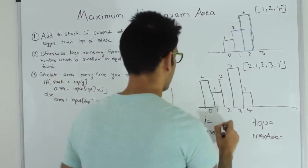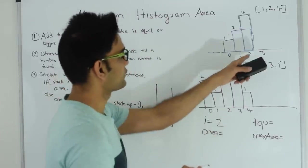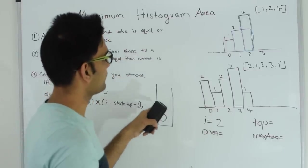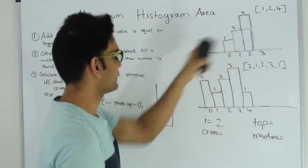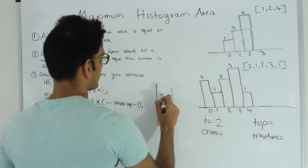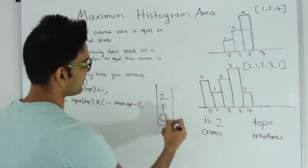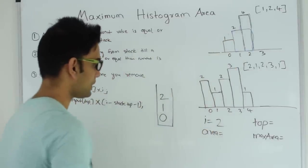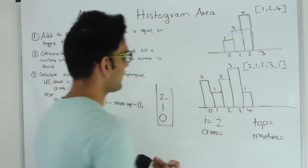My i becomes 2. Since the value at index 2 which is 4 is greater than the value at the top of the stack which is 2, index 2 can also go on top of the stack. Again, notice these are indices and not the actual numbers. Now we have reached the end of the array.